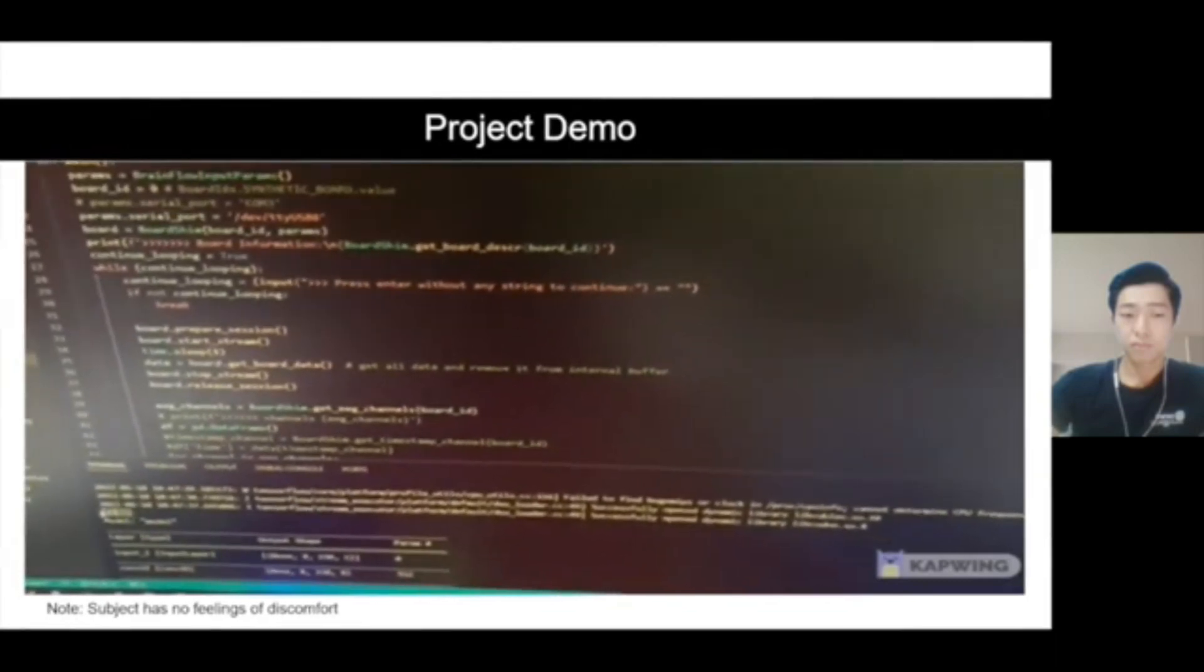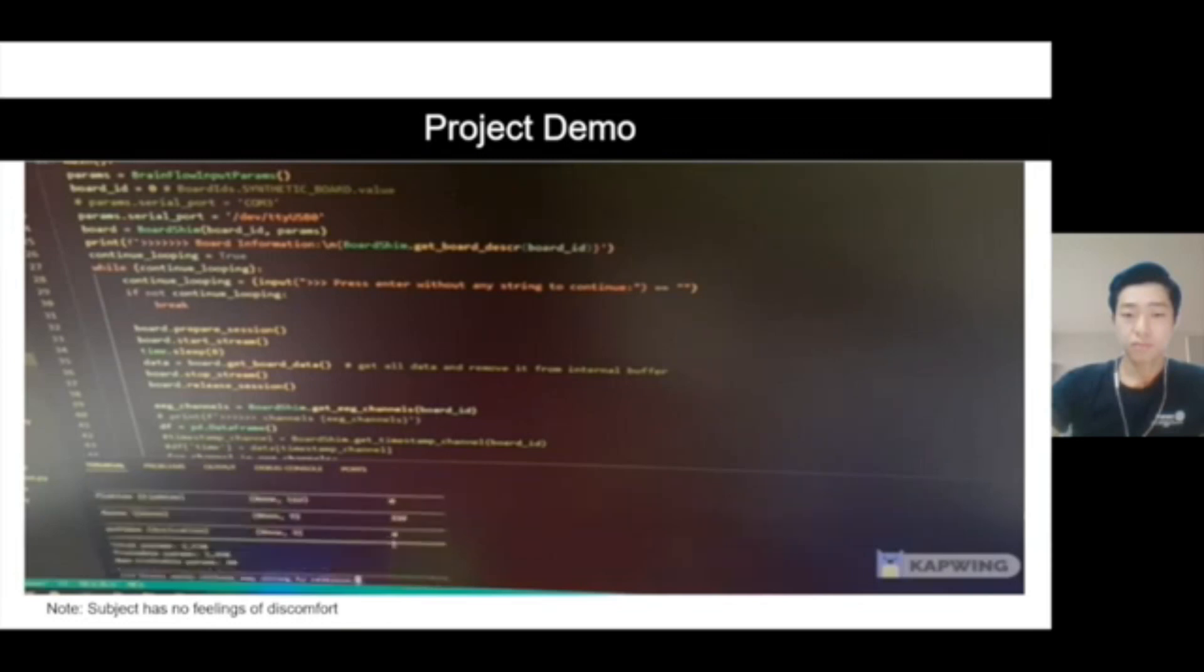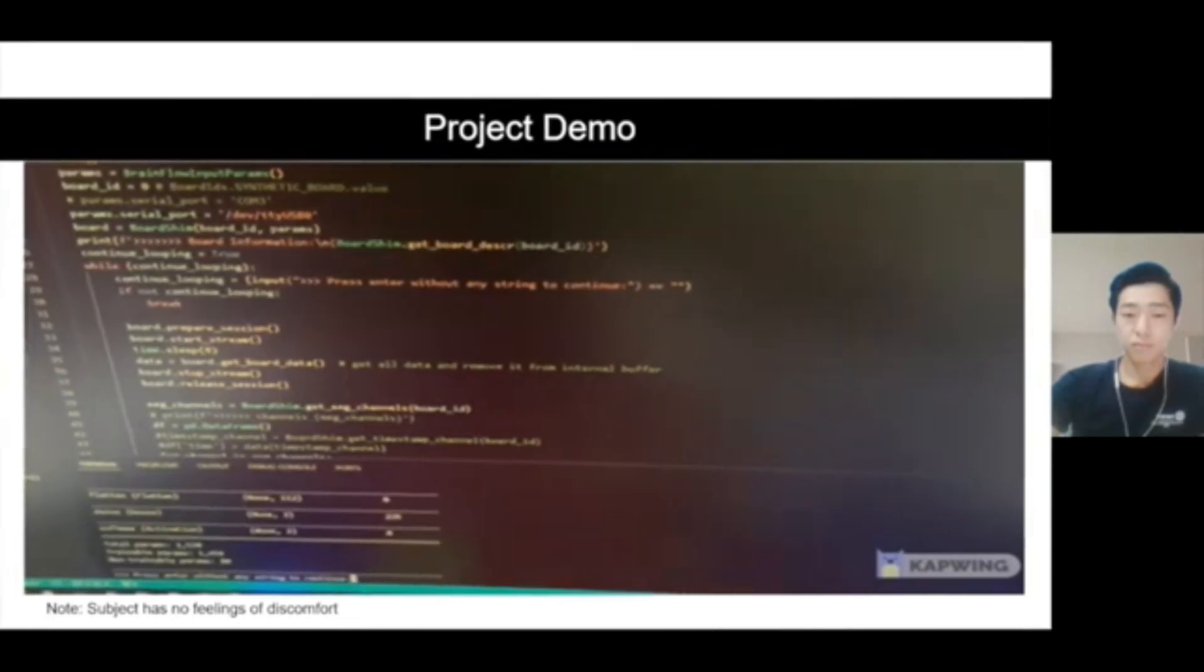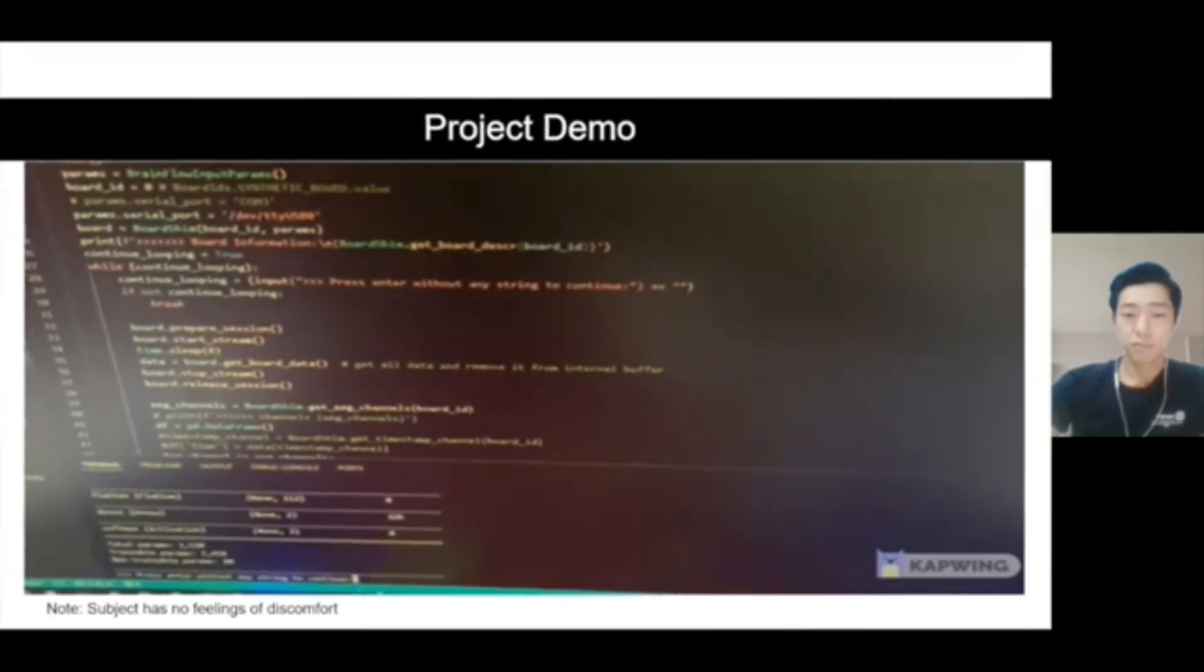As you can see here from the terminal, a 1 is indicated at the bottom of the terminal. That means the directional control of the live EEG signal is pointing to the right. And at the bottom here, you can see press enter without any string to continue. So when I press enter, the loop will initialize again.